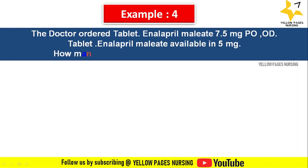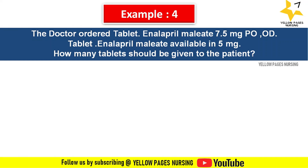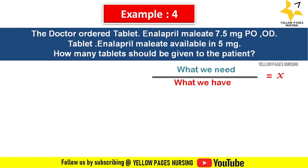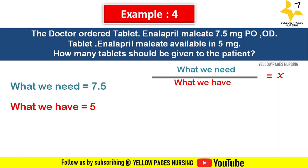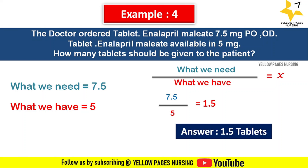Tablet enalapril maleate available is 5 milligrams. How many tablets should be given to the patient? The formula is what we need divided by what we have. What we need is 7.5 milligrams — the doctor's order. What we have is one tablet containing 5 mg. Applying this, we get 7.5 divided by 5, which gives 1.5. Hence one and a half tablets need to be given to the patient.